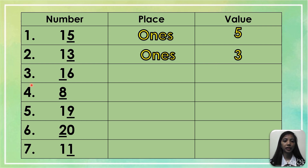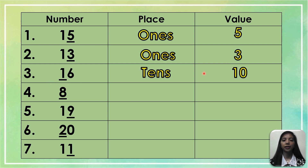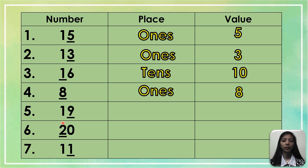In number 3, the number is 16 and the underlined digit is 1. The place of 1 is in the 10s place, and the value of 1 is 10. In number 4, we have 8. Since it is only 1 digit, the place is the 1s place, and the value is 8. In number 5, we have 19 and the underlined digit is 9. The place is the 1s place, and the value is 9.